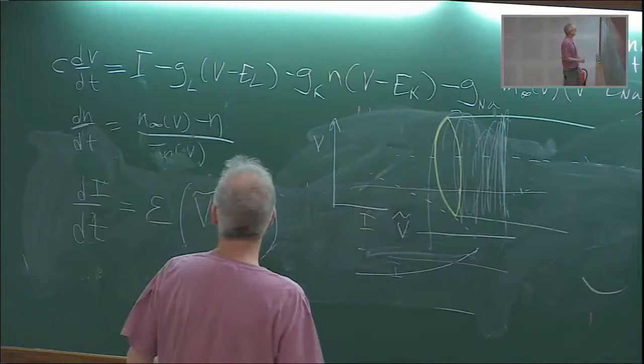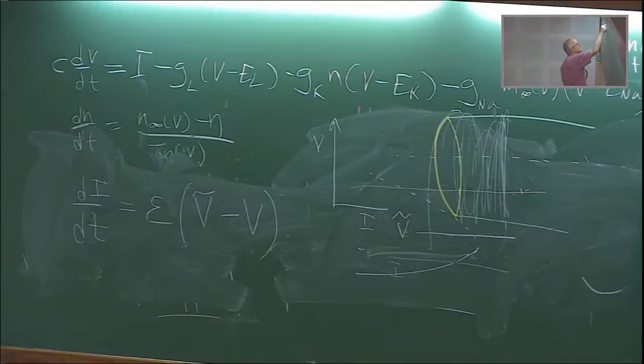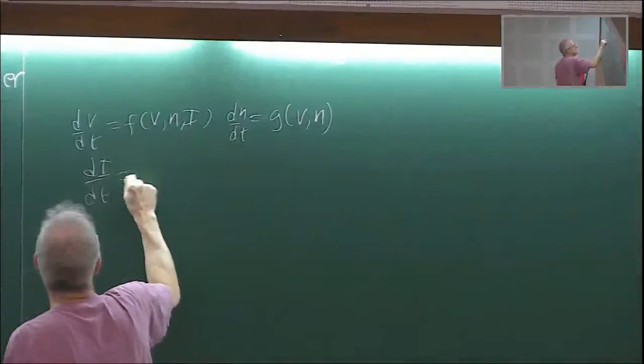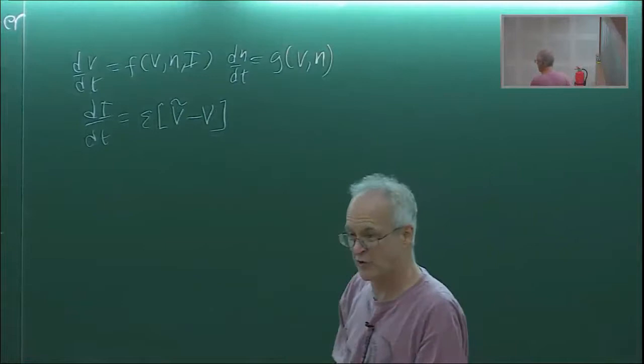We have dv/dt equals f of v and i, dn/dt equals g of v, n. I'm going to use something called the method of averaging.